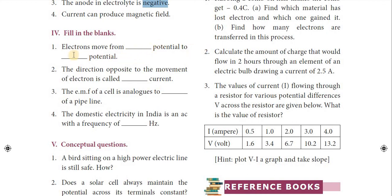Recap: electrons move from lower potential to higher potential. The direction opposite to the movement of electrons is called conventional current. The EMF of a cell is analogous to the water pump of a pipeline. The domestic electricity in India is an AC with a frequency of 50 Hz.